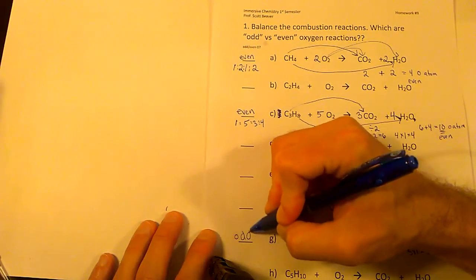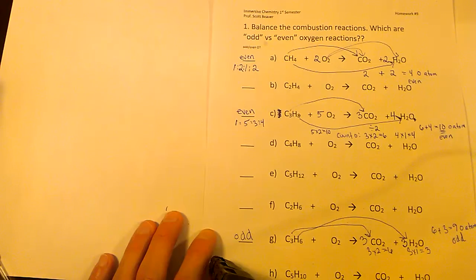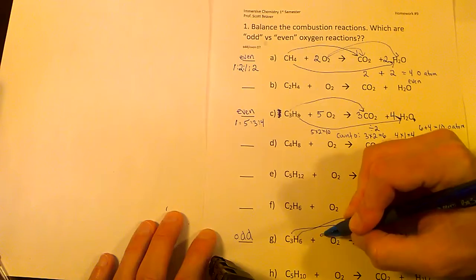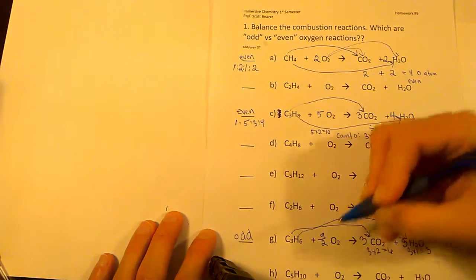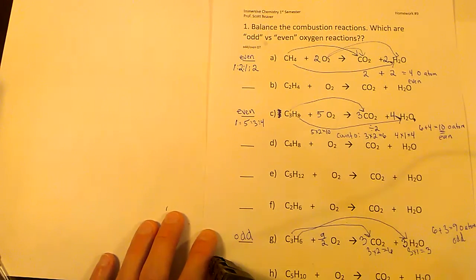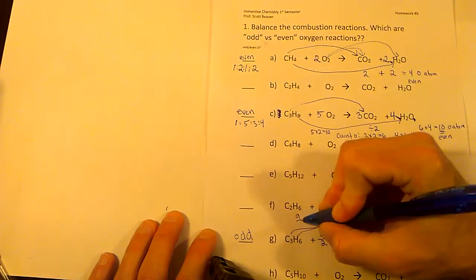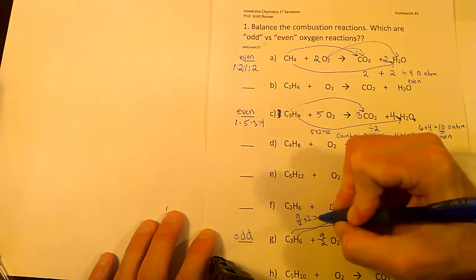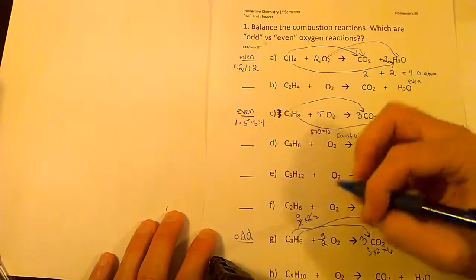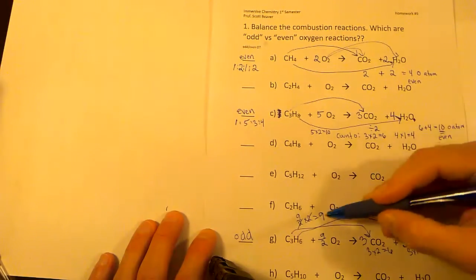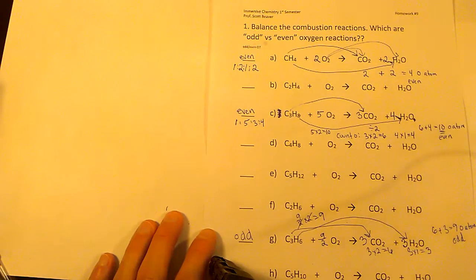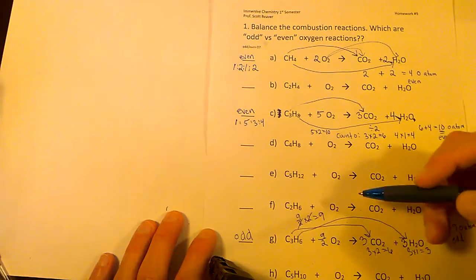Six plus three is nine O atoms, and nine is an odd number — this is what we call an odd oxygen problem. We want O2, not individual atoms, so the trick is to write nine-halves (9/2) in front of O2. Nine-halves times two: the twos cancel and give us nine. We now have nine oxygens on the left and nine on the right — correct ratio, but we can't have a fraction.